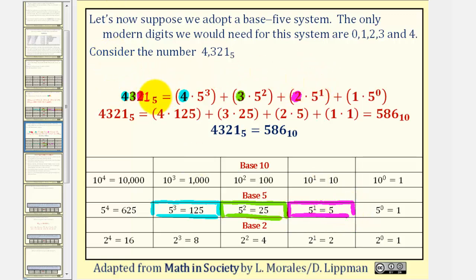And then finally this 1 represents 1, 5 to the zero, or 1, 1. So simplifying the right side, notice how we end up with 586 base 10. We have 500 plus 75 plus 10 plus 1. So 4,321 in base 5 is equal to 586 in base 10.